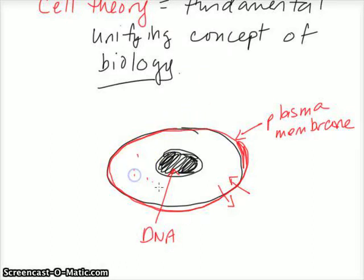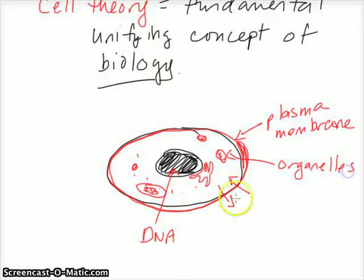Outside of the nucleus, we have these tiny little structures - we got the lysosomes, the endoplasmic reticulum, the mitochondria. There's a lot more structures, more organelles inside the cell. These are called organelles, and this space here is called the cytoplasm.